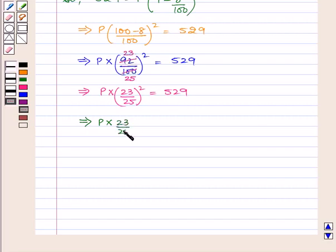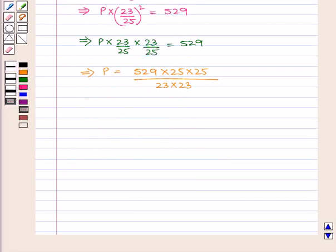This implies P = 529 × 25 × 25 / (23 × 23). Now, 23 × 23 = 529. So, P = 25 × 25, which is equal to 625.